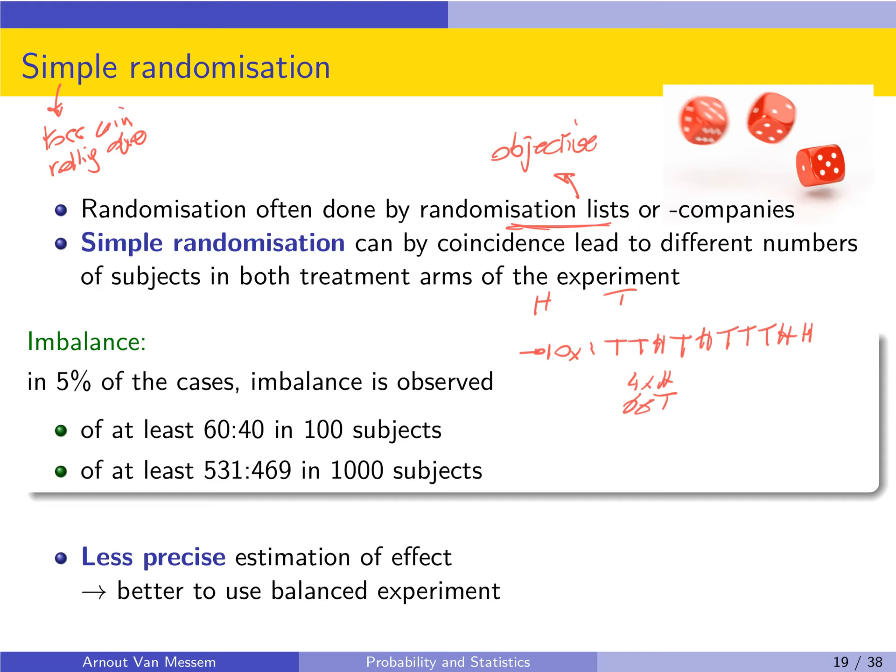And so if you have a group of 100 subjects, in 5% of the cases you get an imbalance of 60 to 40 between the groups. If you increase the group size to 1000 subjects, in 5% of the cases then the imbalance is 531 to 469. So you see that the larger the group is, the less pronounced the differences will be. So you will have more differences or a possibility for more differences in smaller groups.